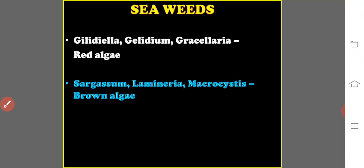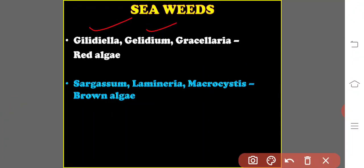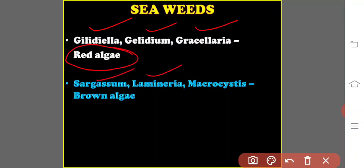Regarding seaweeds, Gelidiella, Gelidium, and Gracilaria are commonly called red algae, while Sargassum, Laminaria, and Macrocystis are known as brown algae. Both red algae and brown algae are also cultivable in India.